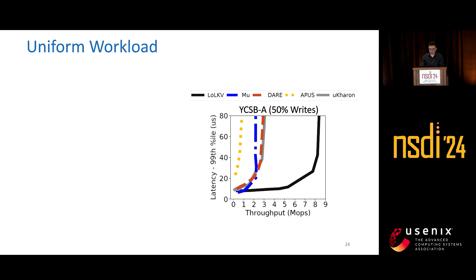From the figure, we can see that APUS achieves the lowest throughput and highest latency of all systems. This is because APUS requires two RDMA writes to commit each operation. MU and UCAR perform better because they require only one RDMA write. While DARE also requires two RDMA writes, it employs request batching, so it performs the same as MU and UCAR.